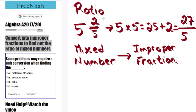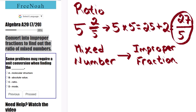We're left with 27 over 5 as the improper fraction. This is simple to write in ratio form. It'll be 27 colon 5. We can also put it in word form and say 27 to 5.